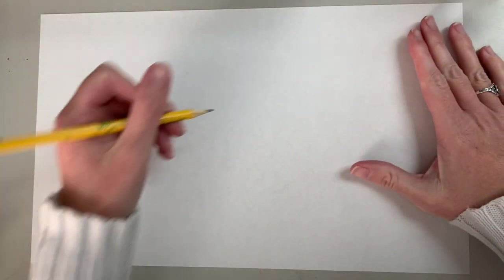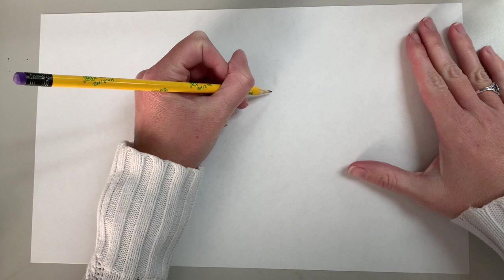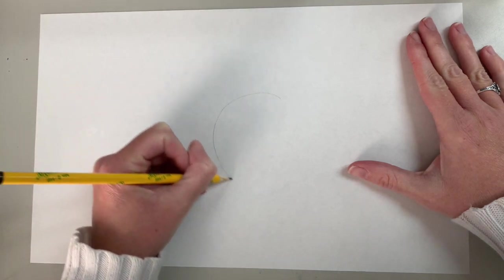Alright, so to start out with for our fish, we are going to start somewhere in the middle of our paper and we are going to draw a big circle. So I'm going to start out with a circle right here.